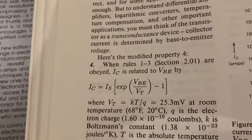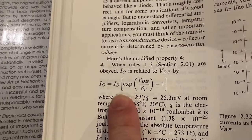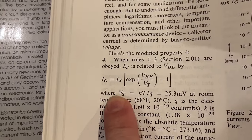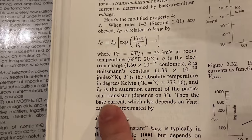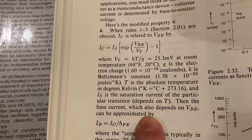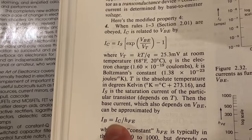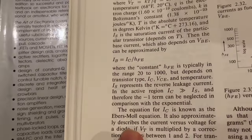Voltage. Here's the modified property 4. So here they give the Ebers-Moll equation, the simplified version of it. Then the base current, which also depends on VBE, can be approximated by this equation with the beta relationship.